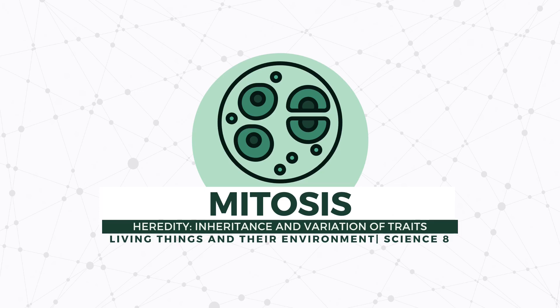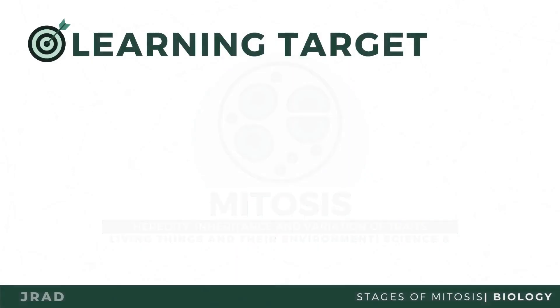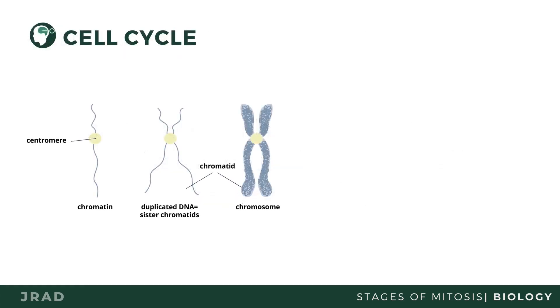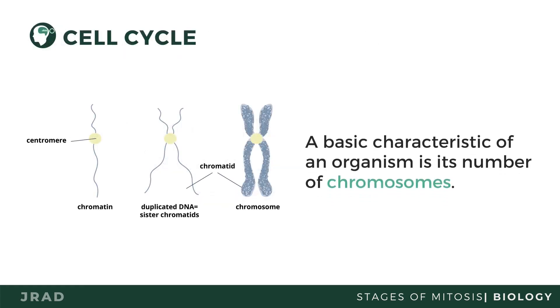In this video lesson, we will explain how the phases of mitosis contribute to cell reproduction. A basic characteristic of an organism is its number of chromosomes. A chromosome refers to a more compressed and coiled status of DNA seen during cell division.